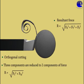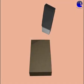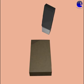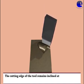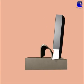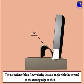In this video, we are going to see about the oblique cutting process. Consider a tool with a cutting edge and workpiece. The cutting edge of the tool remains inclined at an acute angle to the direction of tool feed or work feed. The direction of chip flow velocity is at an angle with the normal to the cutting edge of the tool.